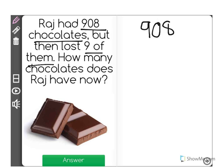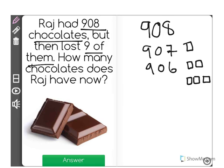So when he loses 1 chocolate, he has 907. After he loses 2 chocolates, he has 906. Notice how each chocolate he loses, we take 1 more away from how many he has.